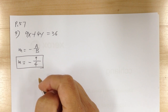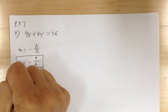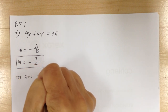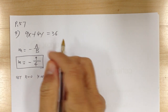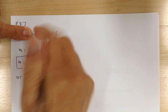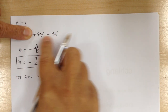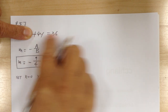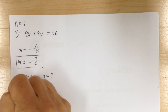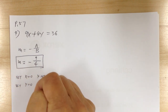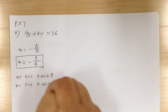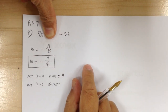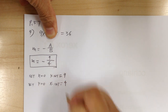Now to find the intercepts. Set x equal to 0 to find the y-intercept — this term is gone, so divide both sides by 4. Y-intercept equals 9, since 36 divided by 4 is 9. Then set y equal to 0 to find the x-intercept — divide both sides by 9, so x-intercept equals 4.